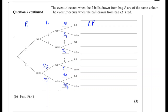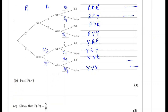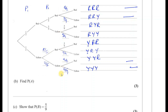Looking at all the different outcomes: red-red-red, red-red-yellow, red-yellow-red, red-yellow-yellow, yellow-red-red, yellow-red-yellow, yellow-yellow-red, and three yellows. The probability of A is when the two balls from bag P are the same color — so two reds or two yellows. We don't have to worry about the third ball, so we only look at the first two picks.